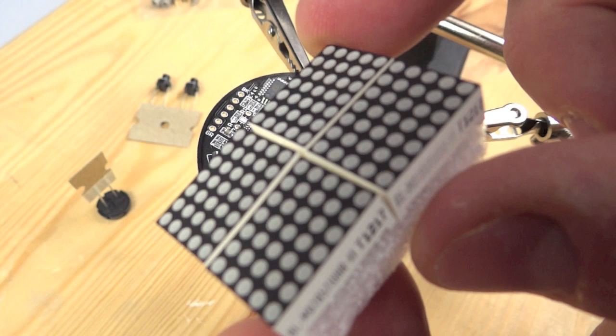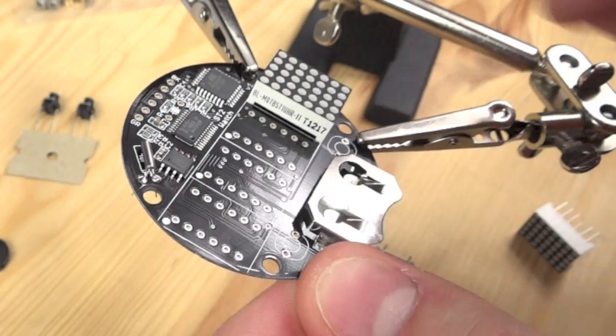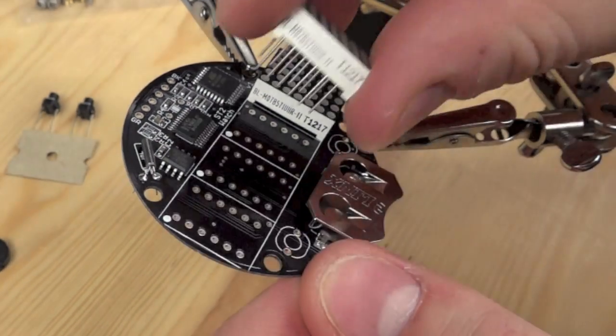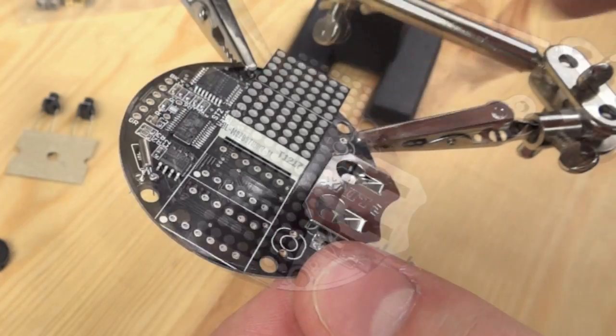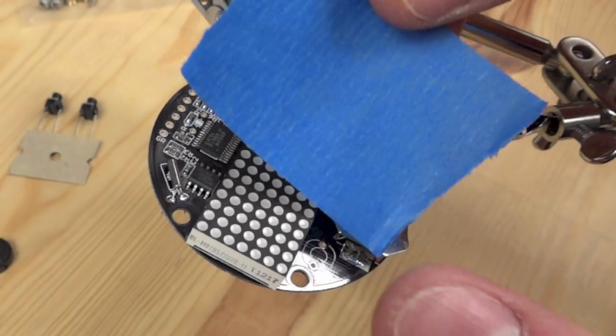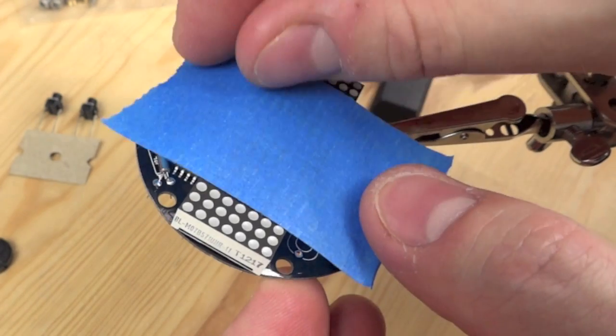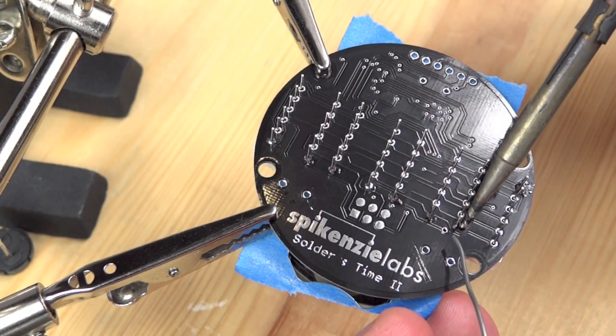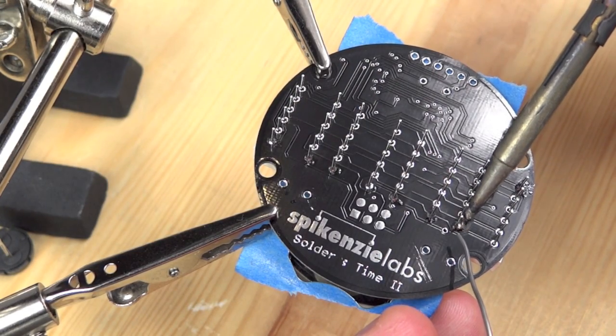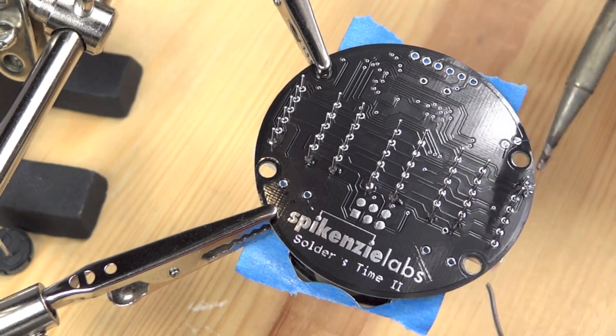The display on the new Solder Time 2 is a matrix of LEDs, which enables it to display messages. The previous one just used normal LED numbers. So once you've got all those put through there, then again, this is my tip anyway, tape a bit of tape to it, and flip it over so it holds them in place whilst you solder the legs one at a time. You'll notice there's loads of legs there.